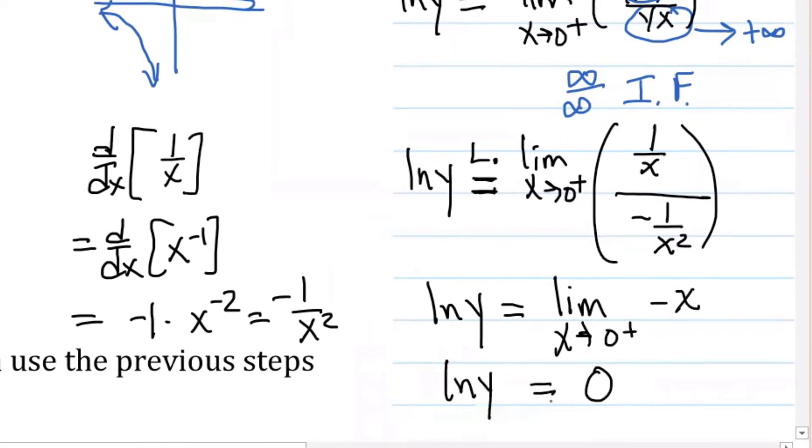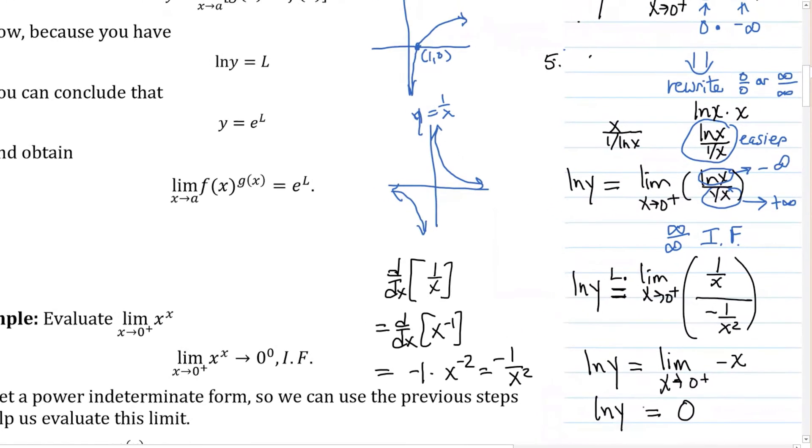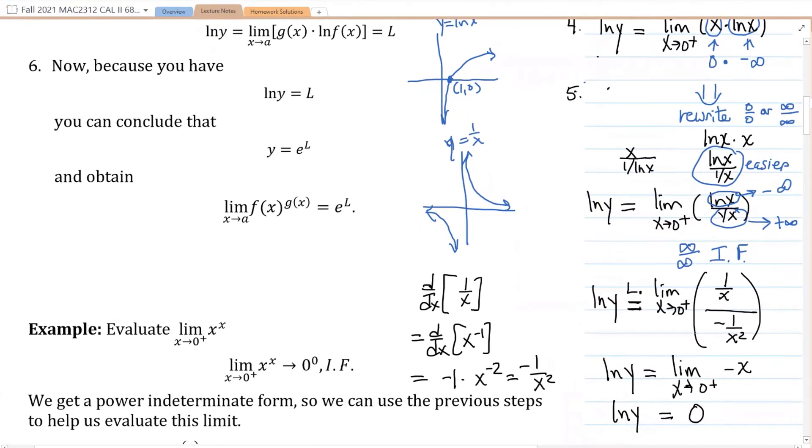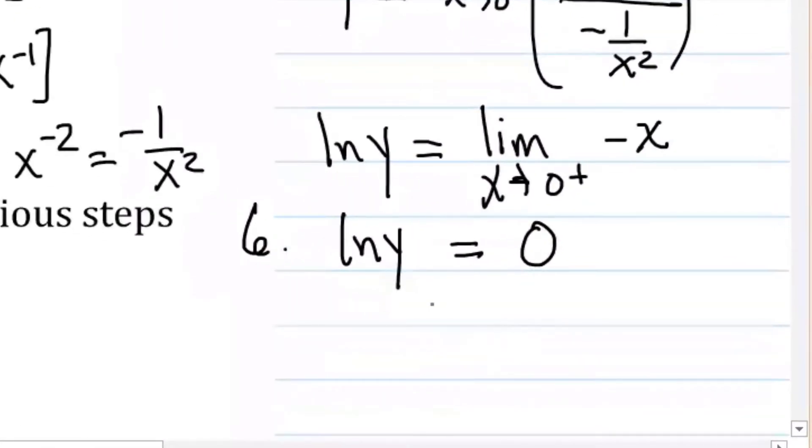But we're not done because that's not actually the limit we were looking for. The limit we were looking for was y. So what we want to find is y. So step six, you're actually going to solve for y in this equation. So if the natural log of y is equal to zero.